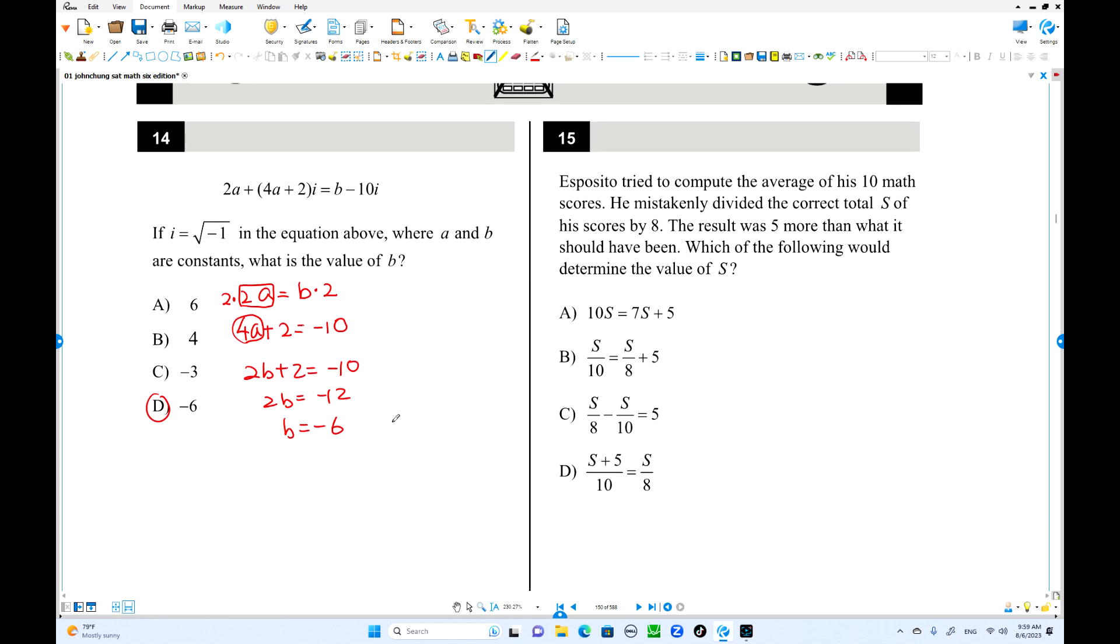Number 15. The guy tried to compute the average of 10 math scores. The total is S over here. So the average should look like this one, S over 10. But by accident, he divided by number 8. This is the result, the wrong result. This is wrong calculation. But this is 5 more than you should have.